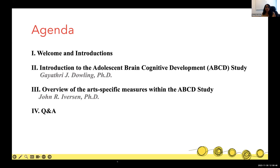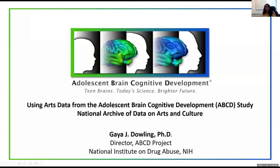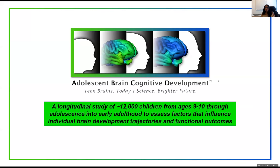Thank you for inviting me to speak today. I'm going to give an overview of the Adolescent Brain Cognitive Development Study, and then John will delve deeper into the specific measures that may be of most interest to this group. The ABCD study is a longitudinal study of close to 12,000 kids that were enrolled when they were 9 to 10 years old, between 2016 and 2018, and are being followed through adolescence into early adulthood, looking at factors influencing brain development trajectories and other outcomes.